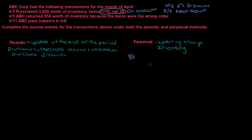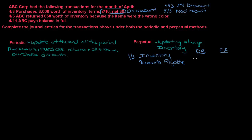Since 2/10 net 30 means on account, if we purchased inventory under the perpetual method, one account is going to be inventory and the other is accounts payable because we owe that vendor money. Inventory has a normal debit balance, so debit inventory $3,000. Accounts payable is a liability with a normal credit balance, so credit accounts payable $3,000. That's all you're required to do.